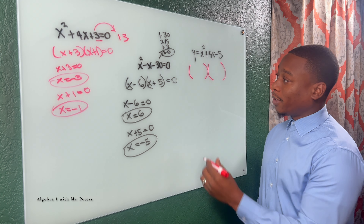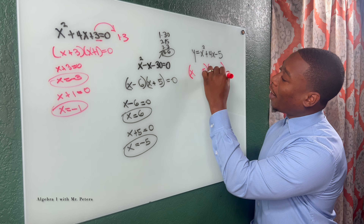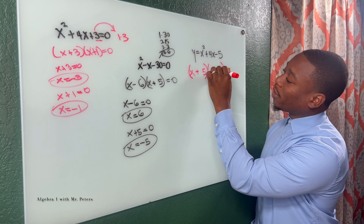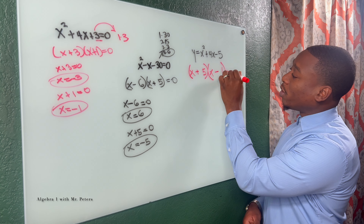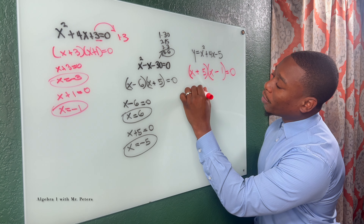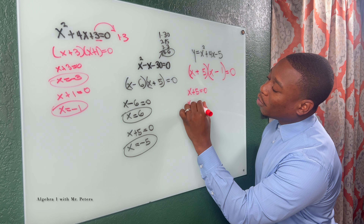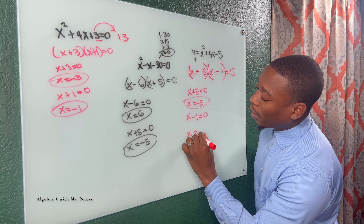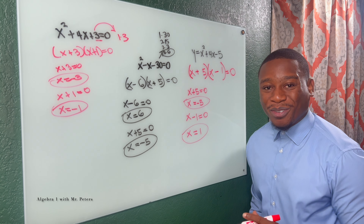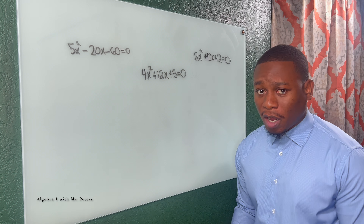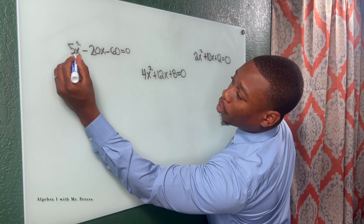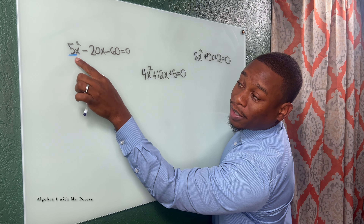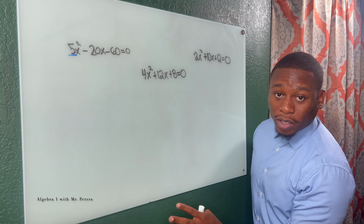In our third example we'll sometimes see y instead of zero, but it's still a quadratic equation. We do the same thing — it's going to multiply to give us negative five and when we add gives us four. Because five is negative, we know those signs are probably not the same. The factors are x plus five and x minus one. So five is positive, one is negative. Setting equal to zero gives x equals negative five or x equals positive one.